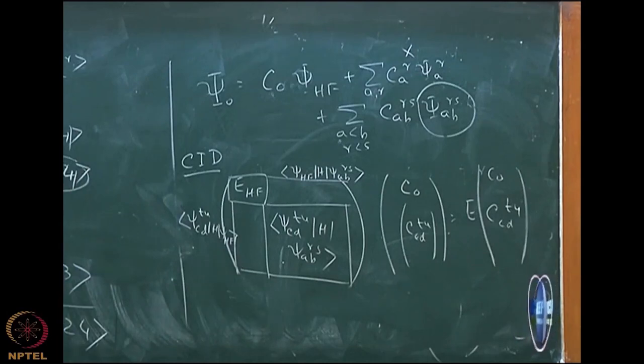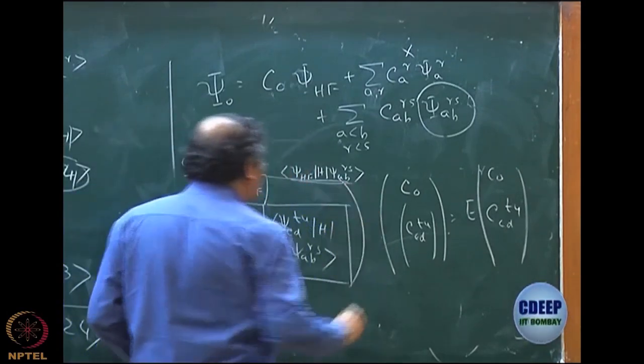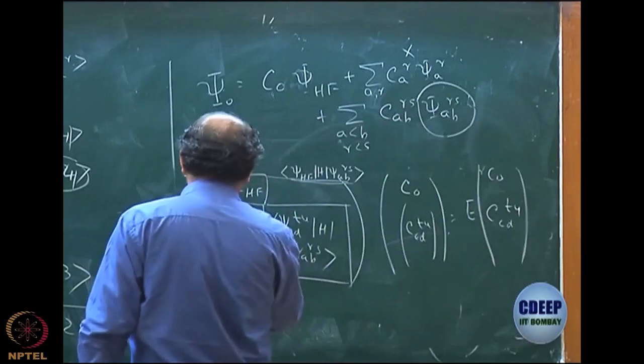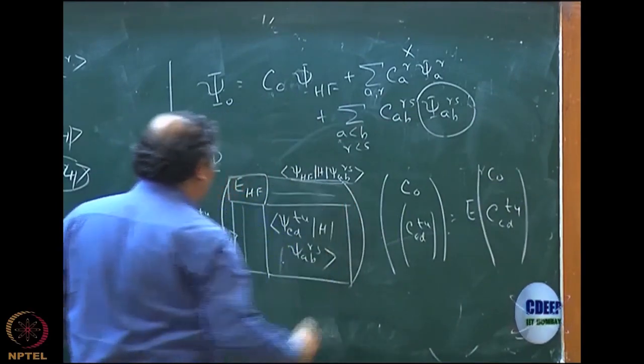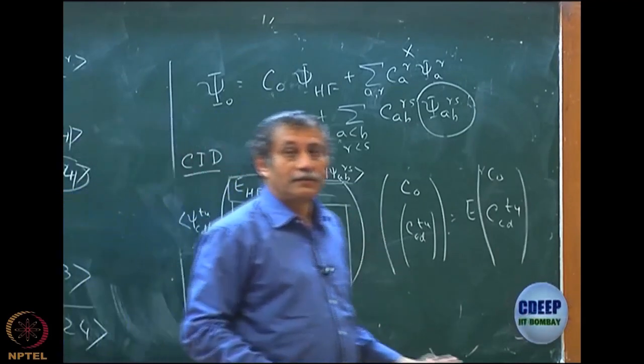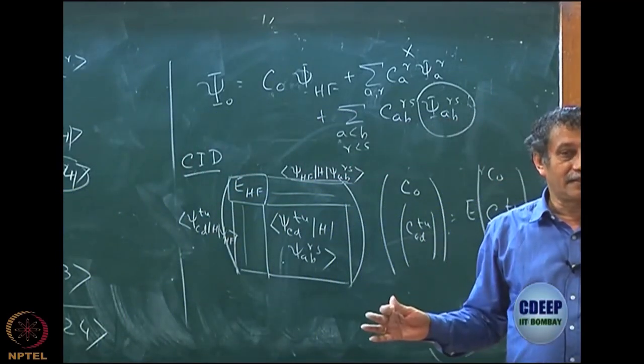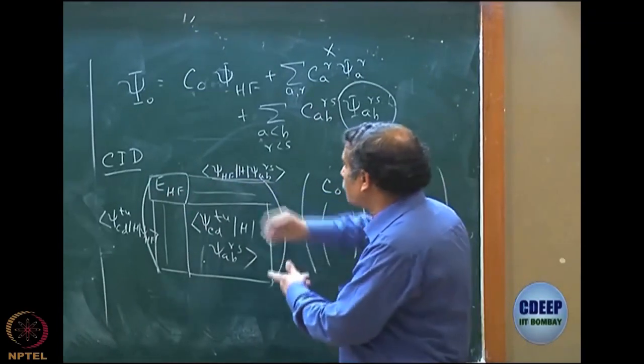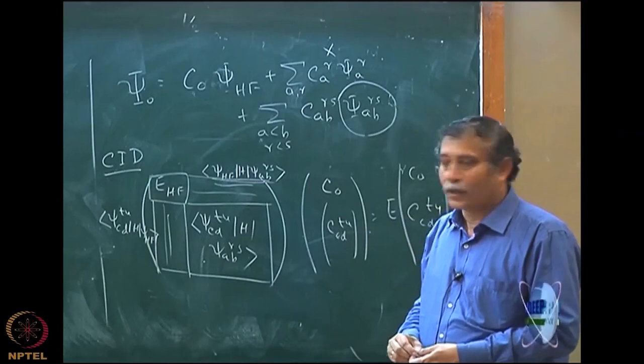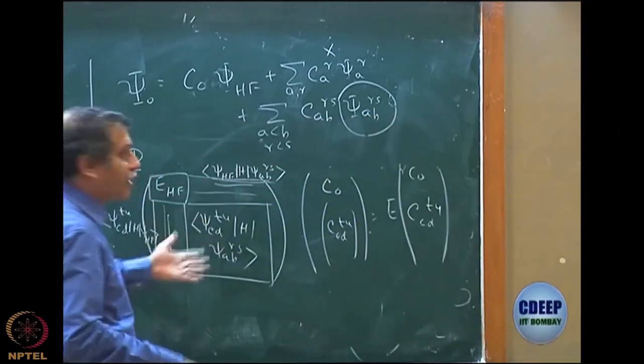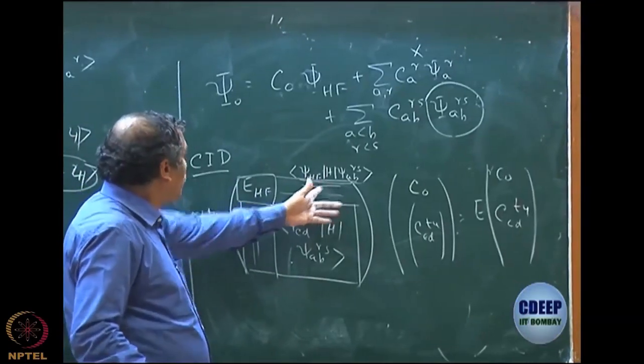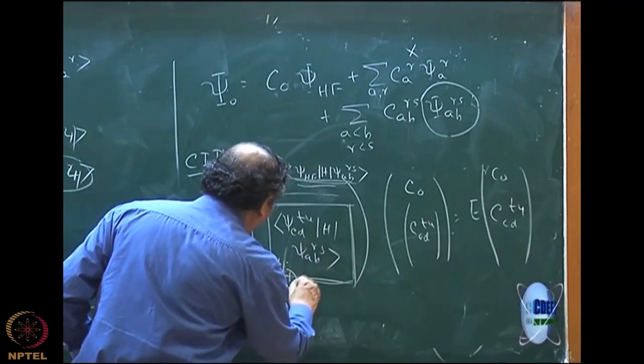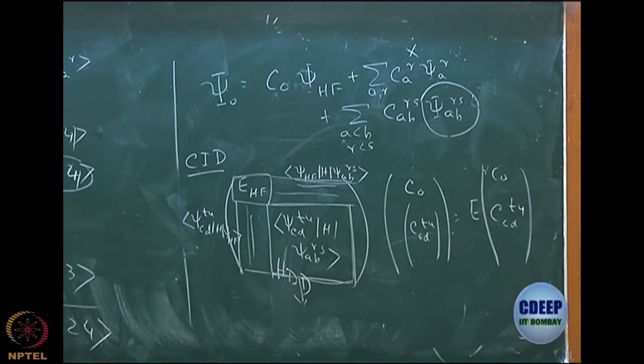So that is an eigenvalue equation in general. Now you see this is no longer zero because there is no Brillouin's theorem for this. In fact, these integrals are nothing but ABRS, AB anti-symmetrize RS and this is RS CD, the CD anti-symmetrize or TU anti-symmetrize CDTU. So these values will all be there. So this is a completely coupled matrix and you have to now diagonalize this. So for the first time, the ground state will no longer be E Hartree-Fock, ground state will now change because of the coupling terms here.